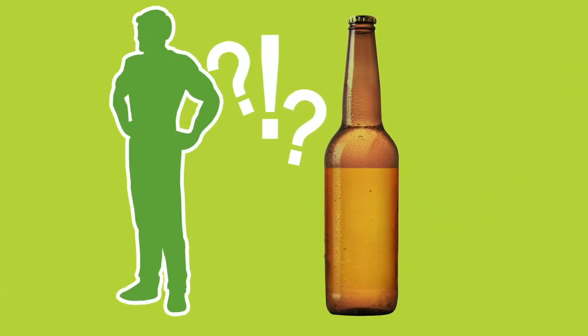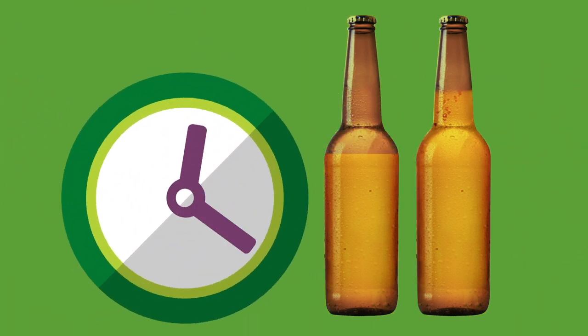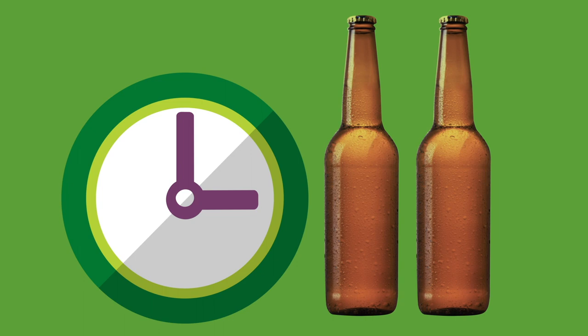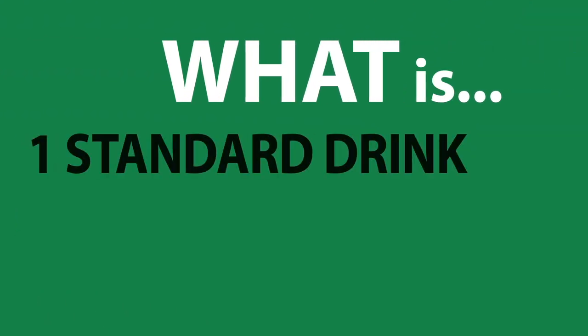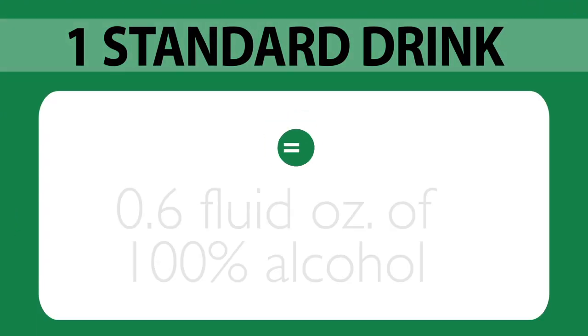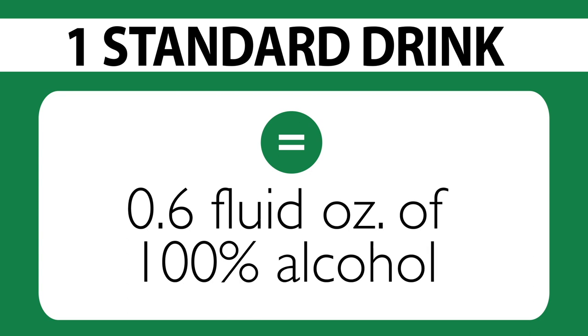To avoid the not-so-good things about alcohol, you need to know how much you're drinking. It takes nearly three hours to eliminate the alcohol in two standard drinks. So what is a standard drink? About one-half ounce of pure alcohol.